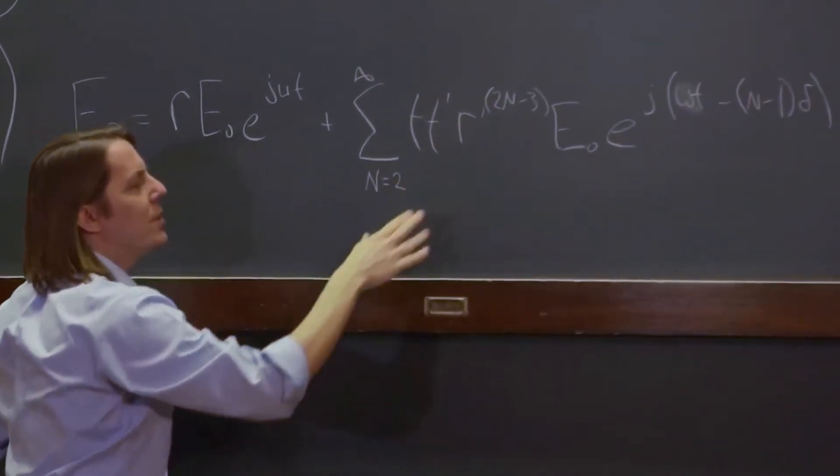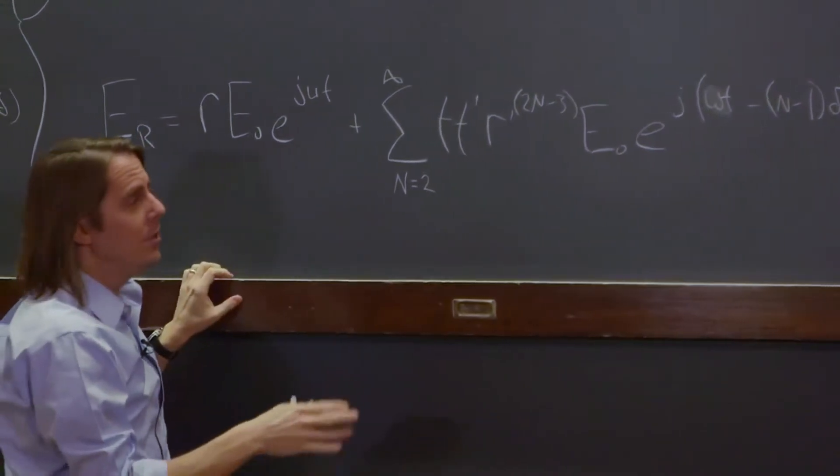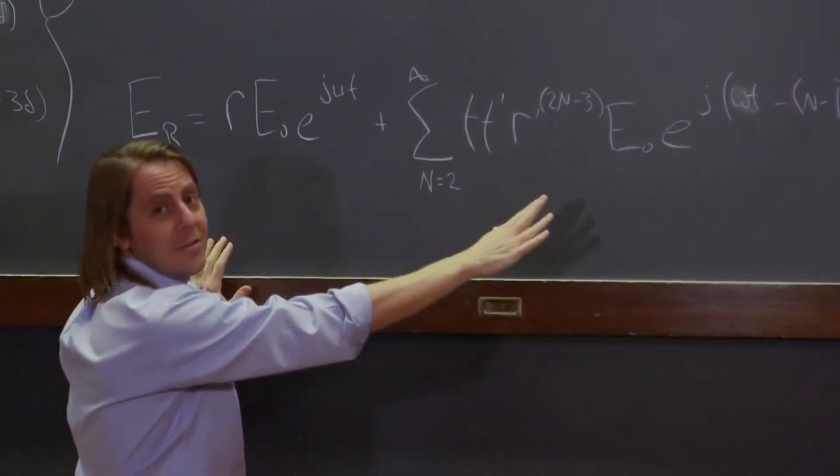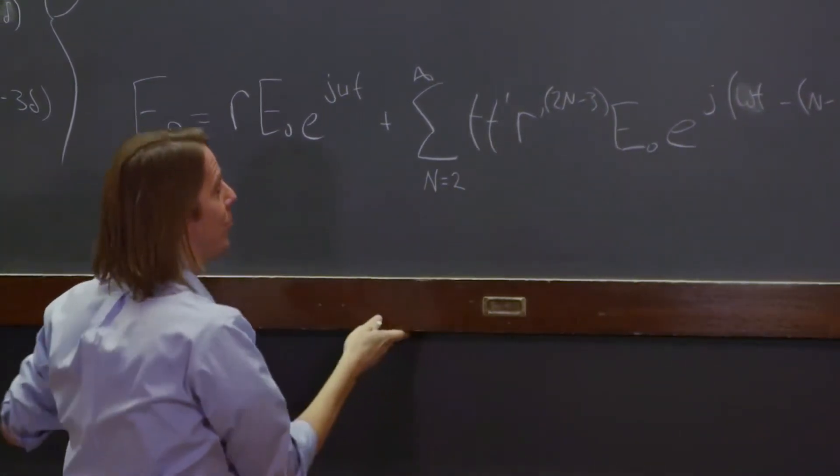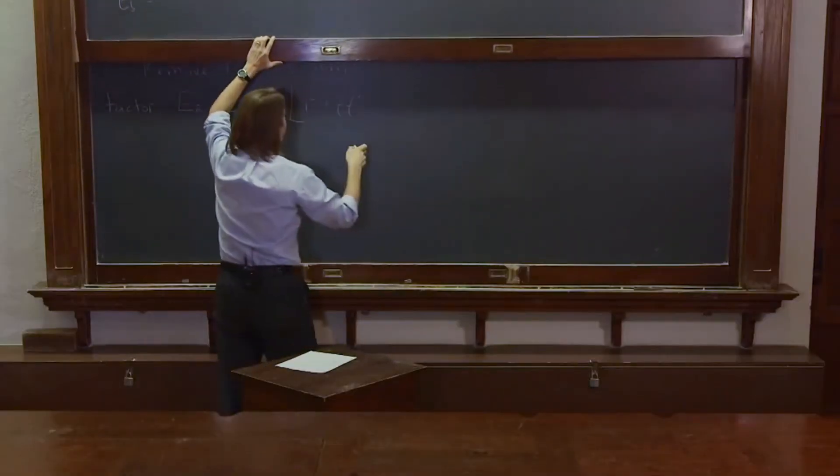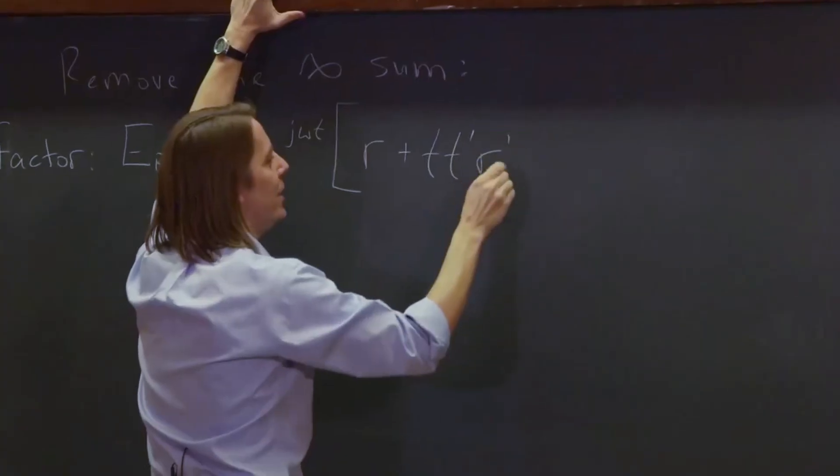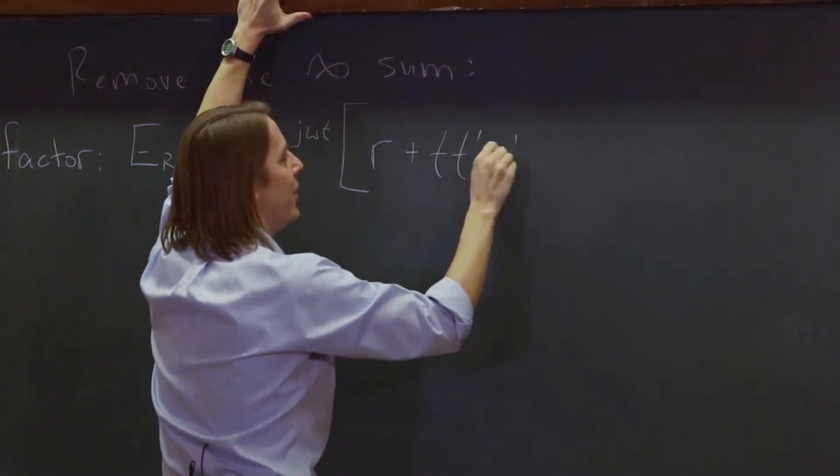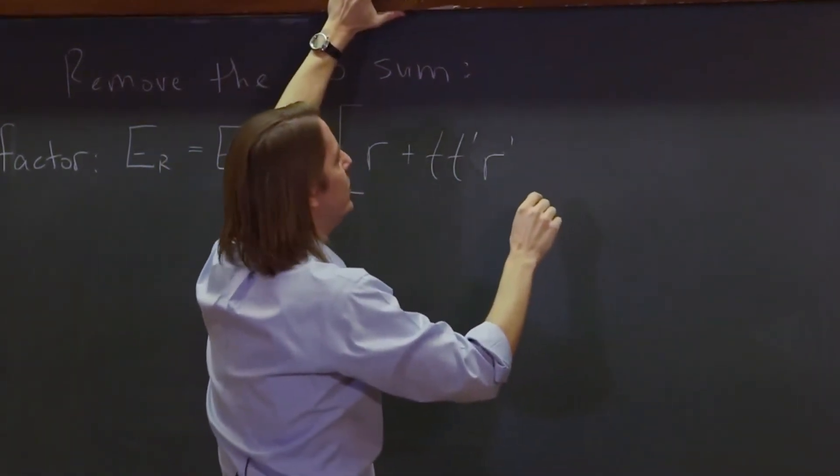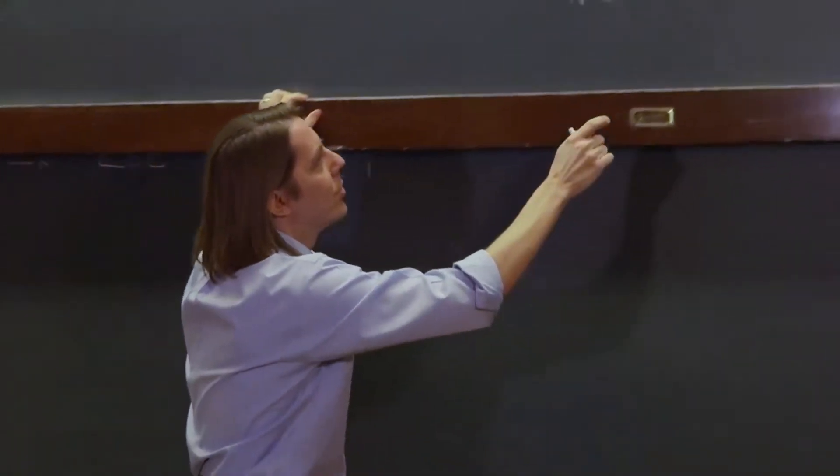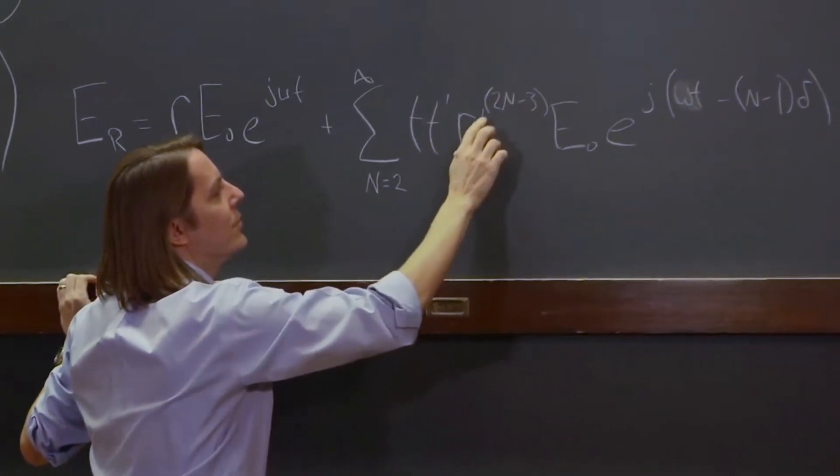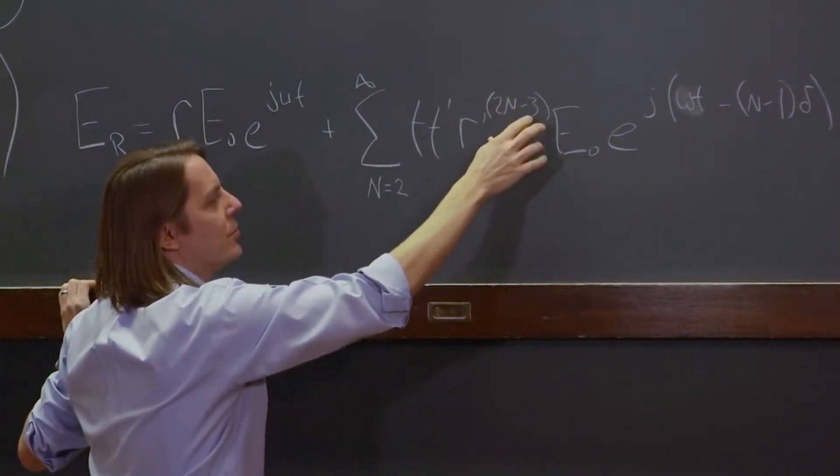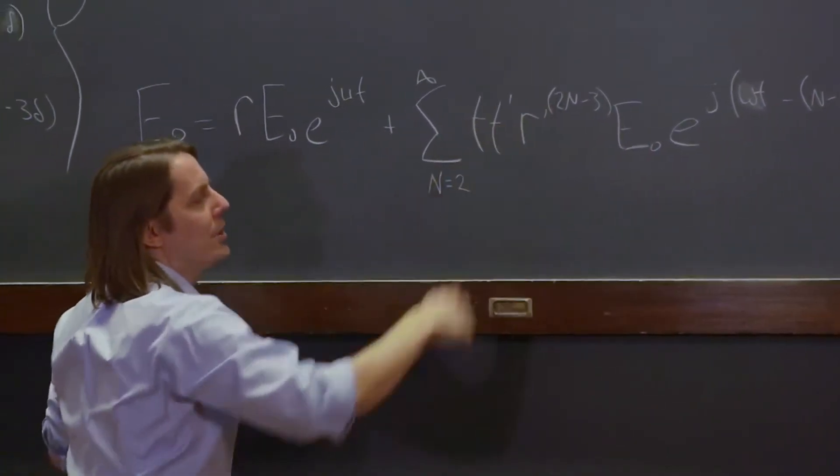Well, these have an N, so we can't pull them out, but I'm going to. Let me show you how. I want to pull an R prime out. I don't care that it has a big N on it. I'm pulling one out. It's coming out of there. And all we got to do is then lower this by one. This is R prime to the 2N minus 3. We can take an R prime out. We just make it 2N minus 4.